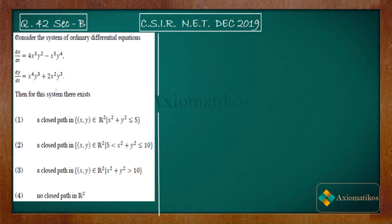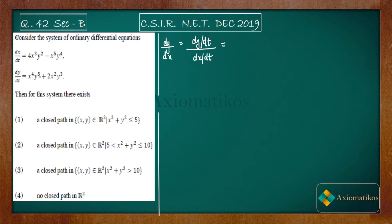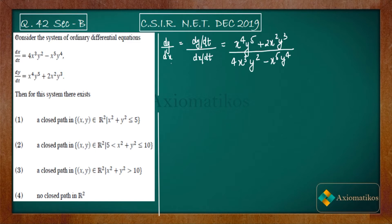Let us first try to solve this differential equation and then we will talk about the options. We have a simultaneous differential equation. What I will do is divide one equation by the other. We have dy/dt equal to one expression and dx/dt equal to another, so I will find out the value of dy/dx — that is, dy/dt divided by dx/dt. Doing this for the right-hand side gives us x⁴y⁵ + 2x²y³ divided by 4x³y² − x⁵y⁴.